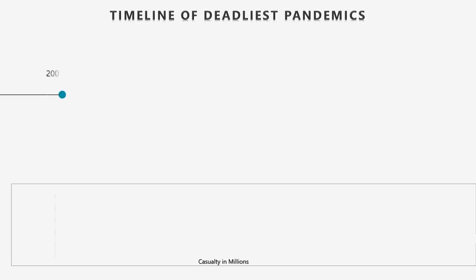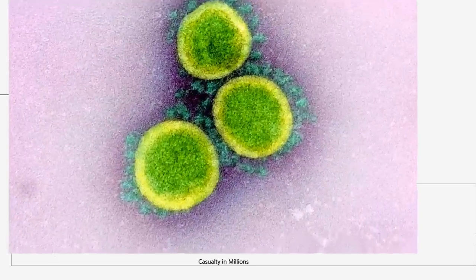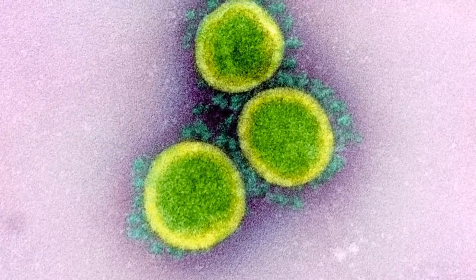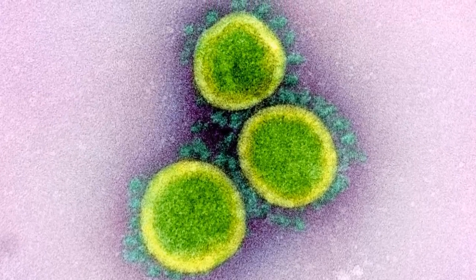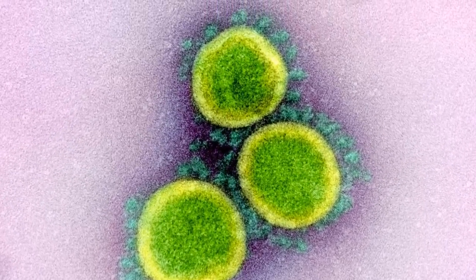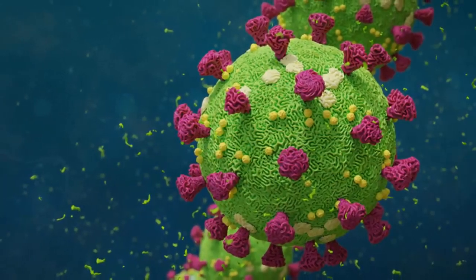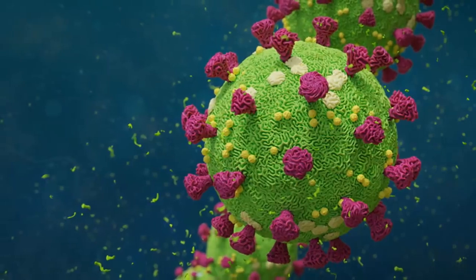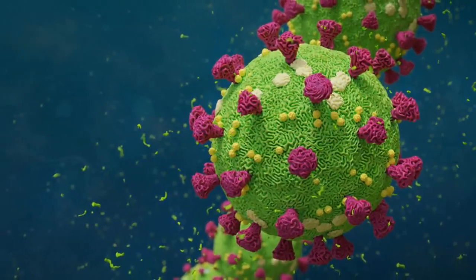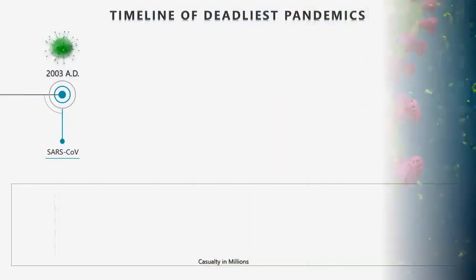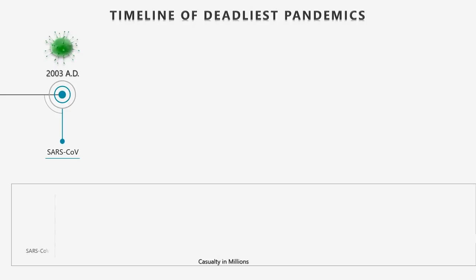At number 5: SARS Coronavirus. Severe acute respiratory syndrome virus was identified in 2003. SARS-CoV is thought to be an animal virus from an uncertain animal reservoir — perhaps bats — that spread to other animals and first infected humans in Guangdong province of southern China in 2002. The SARS pandemic was brought under control in 2003, with 8,098 reported cases and 774 deaths.